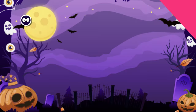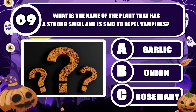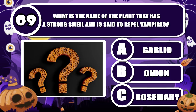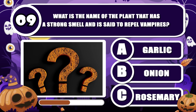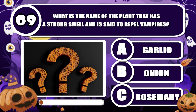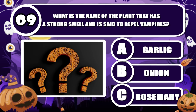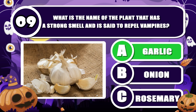What is the name of the plant that has a strong smell and is said to repel vampires? The correct answer is garlic.